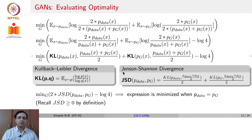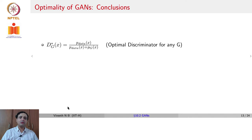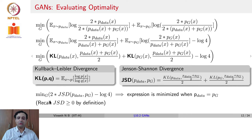With the factor of 1/2 in each KL term, the expression becomes: min over g of 2 times the Jensen-Shannon divergence between p_data and p_g, minus log 4. Jensen-Shannon divergence, like KL, is a non-negative quantity by definition. This is minimized when p_data equals p_g, because then the Jensen-Shannon divergence becomes zero, leaving only minus log 4.